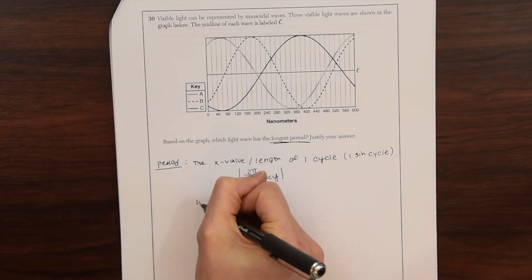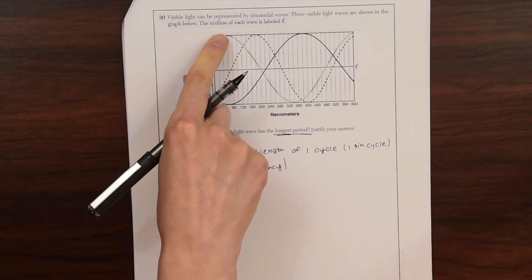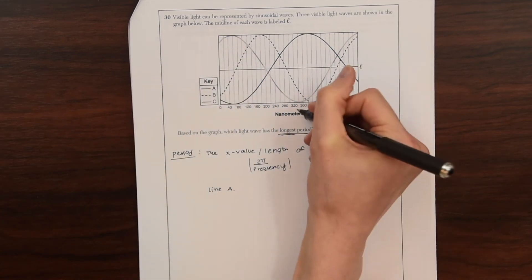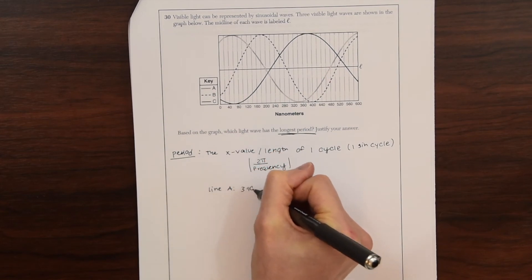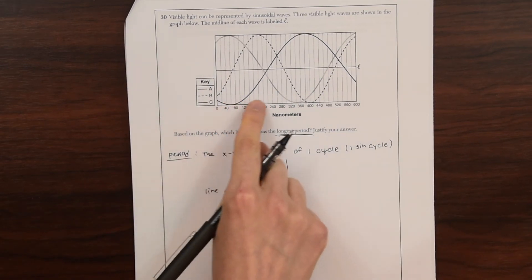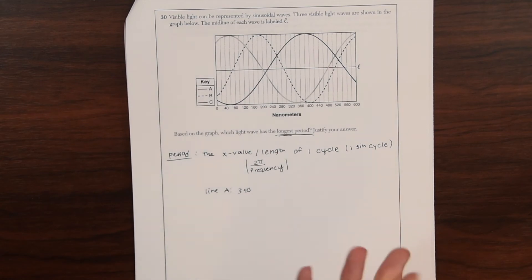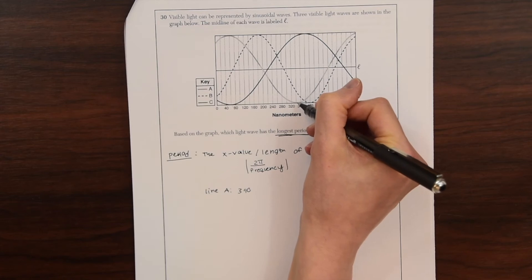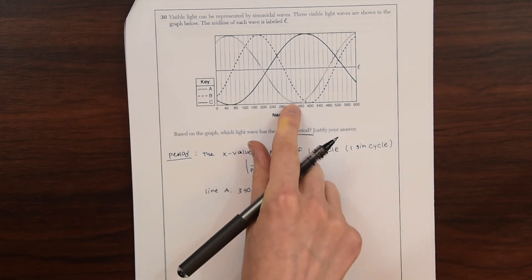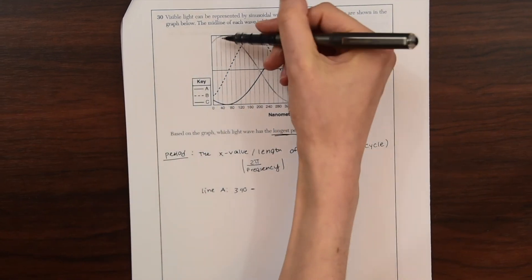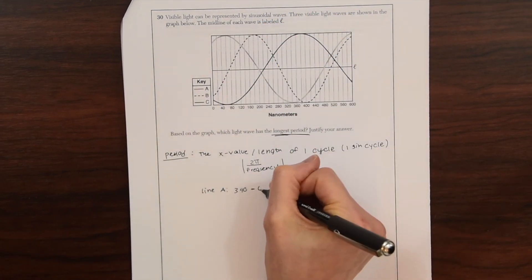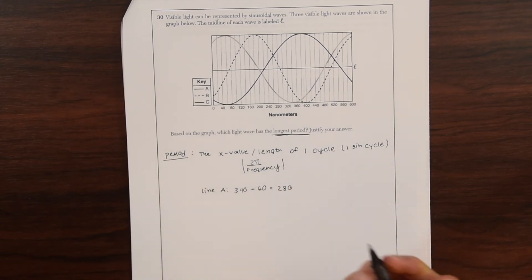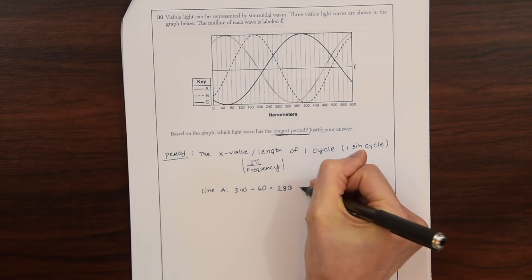So if we look at line A, and we want to measure the distance between the minimum and the maximum here. So we have over here, this is 340. We're getting the x values at the minimum and maximum points and finding the difference between the two. So right here for line A, this is 340 nanometers minus, now the maximum point here looks like it's at 60. So if we subtract these, we get 280. The difference here is 280 nanometers.